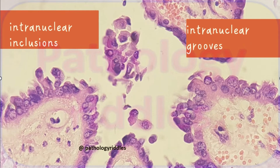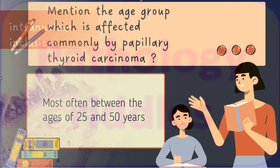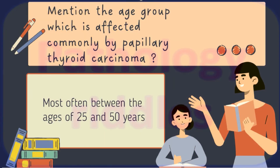Nuclear grooving means it looks like a line in between the nucleus — those are called groovings. Mention the age group commonly affected by papillary thyroid carcinoma. It is most often seen between the ages of 25 to 50 years.